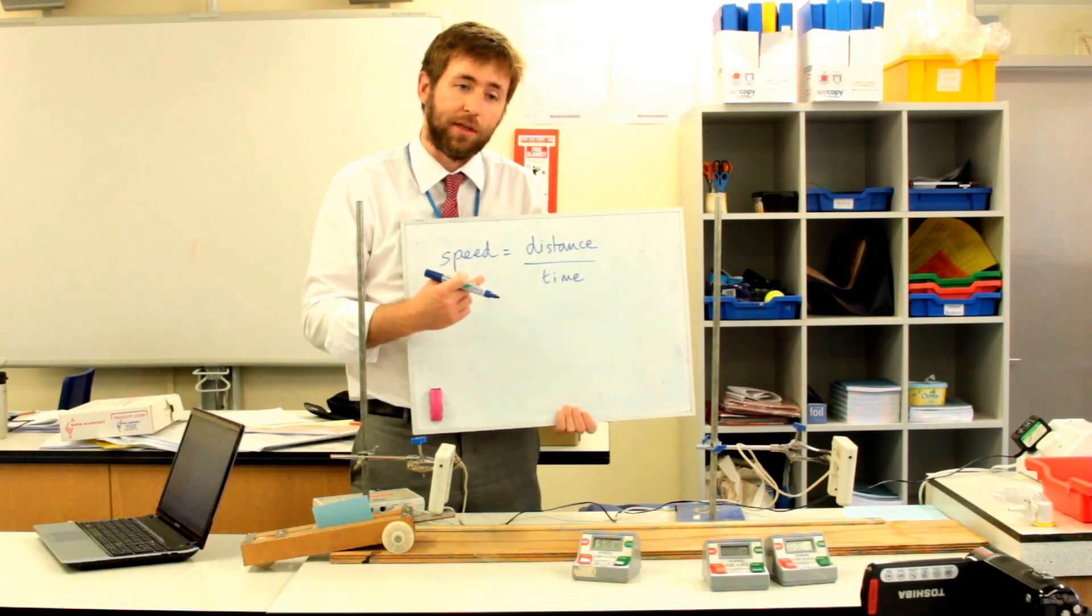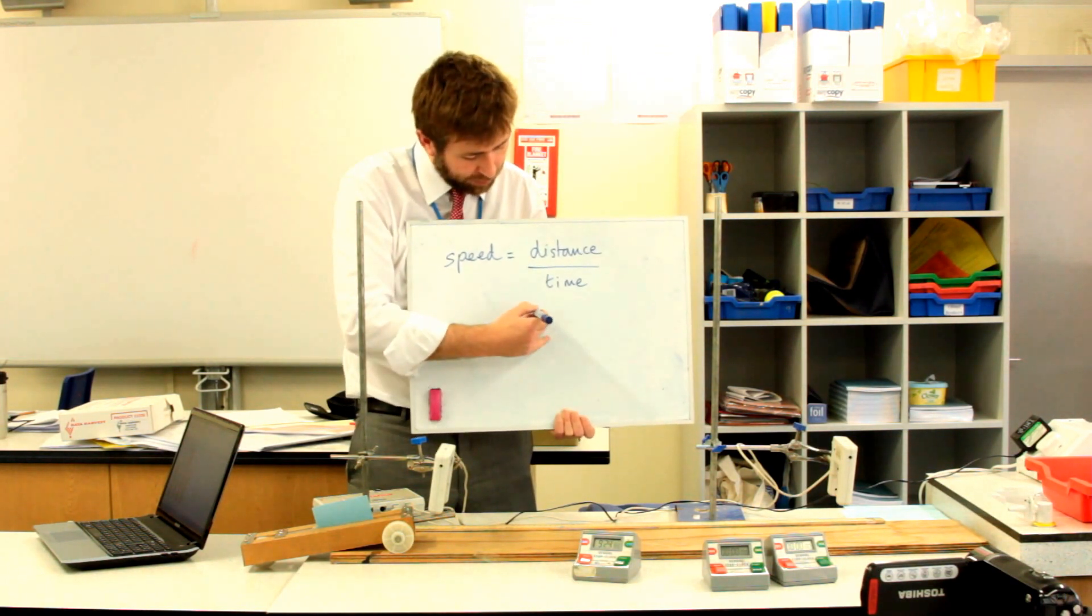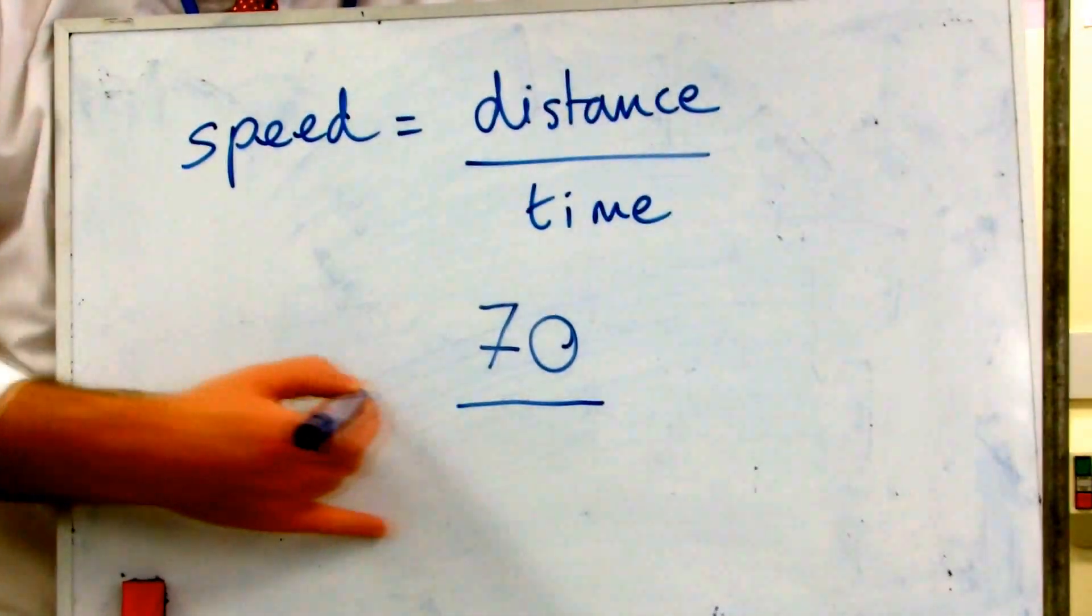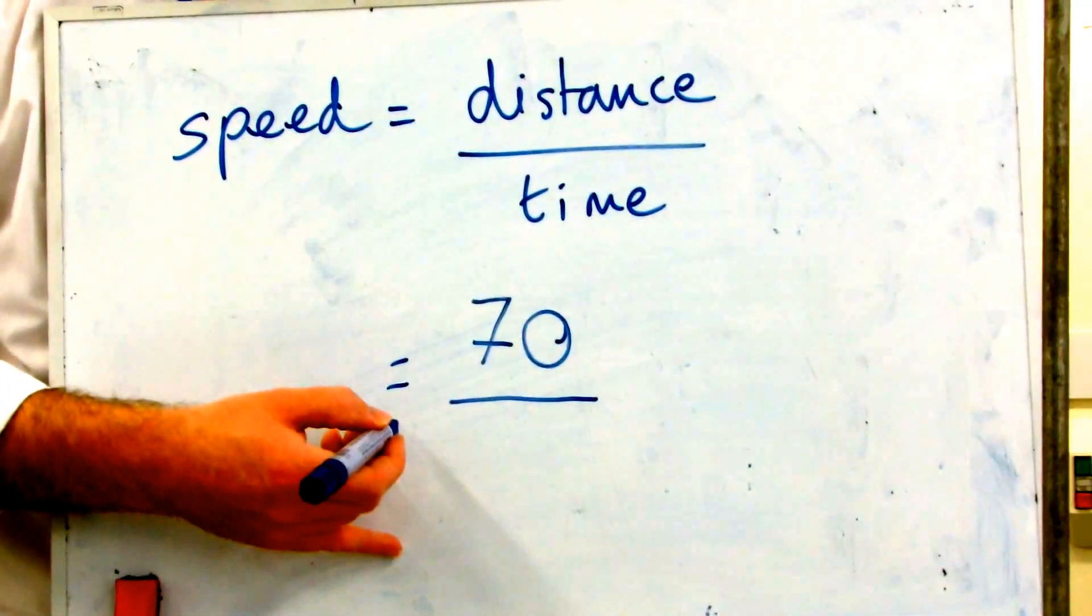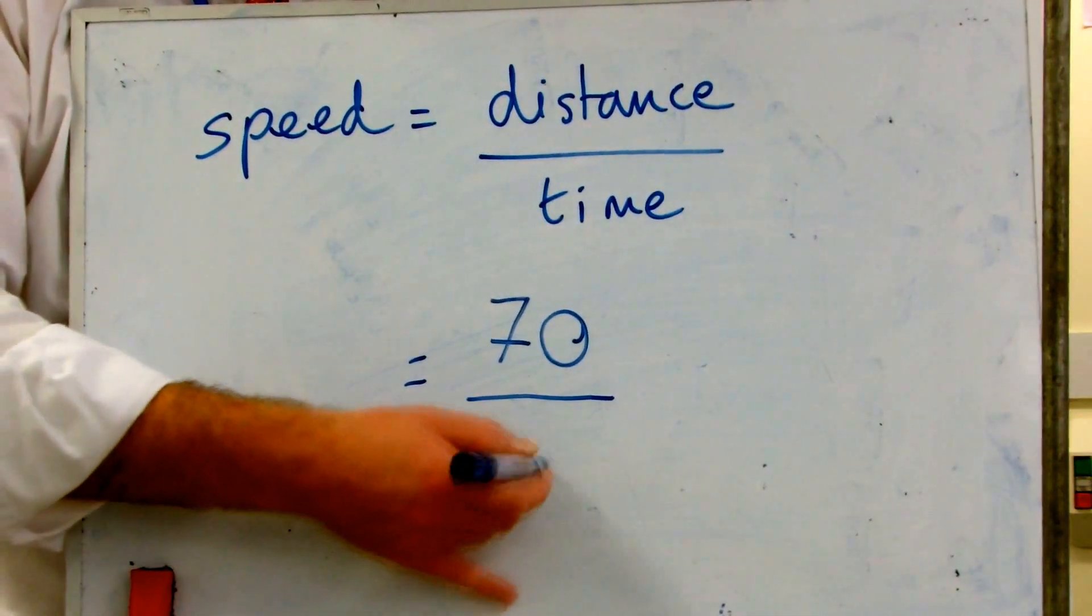And here's where our units have become really important. So I'm first of all going to calculate using the distance I measured as 70 centimeters, and the time I recorded was 1.08 seconds.